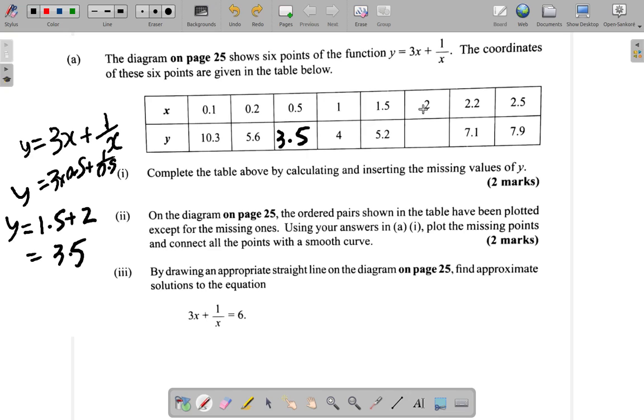And then what happens when x is 2? You have y is equal to 3 times x, but in this case 2. 3 times 2 plus 1 over 2. So 3 times 2 is 6 plus 1 half, which is 0.5. 6 plus 0.5 is 6.5. 6.5 here.